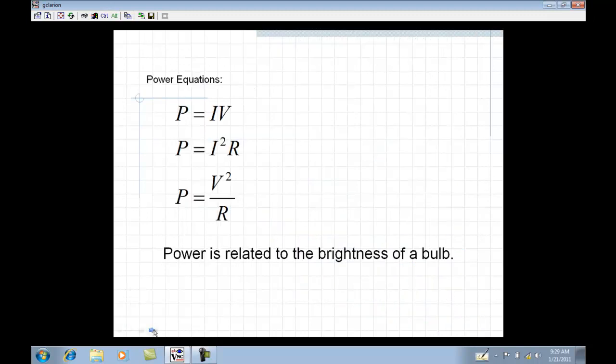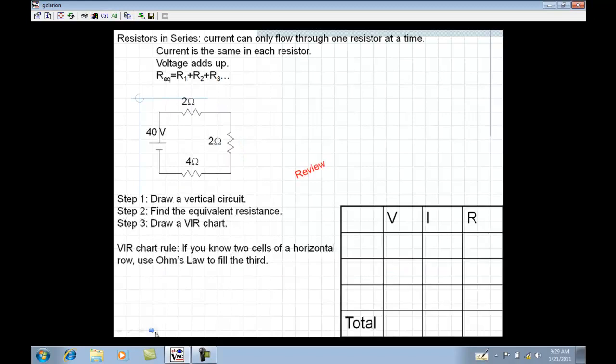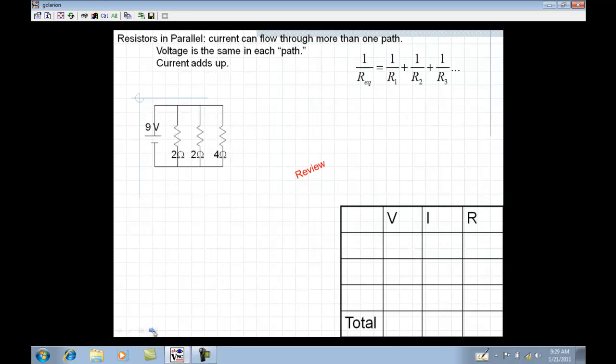Another thing you need to know about the power equations is power's related to the brightness of a bulb. That comes up a lot on multiple choice type questions. The brighter the bulb, the more power it's getting. Or the more power, I guess we could say, it is dissipating.